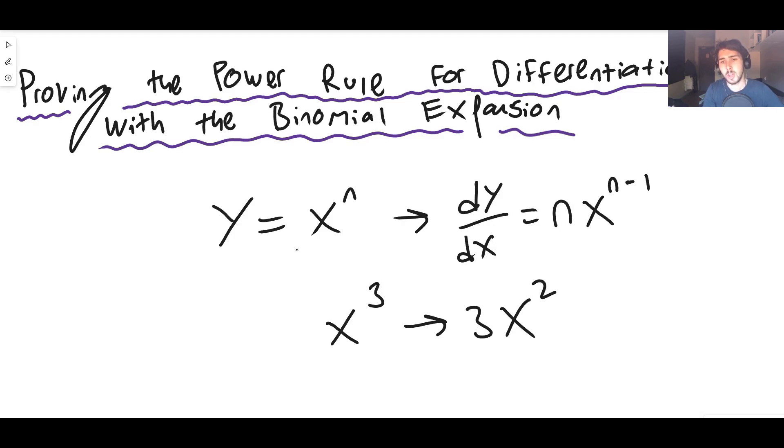So in other words, if you had something like x cubed, we know that this would differentiate to 3x to the power 3 minus 1, which is 2, so 3x squared. That's the power rule, but why does that actually happen? Well, as I say, I've already got a video on this which I'll leave in the description.